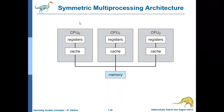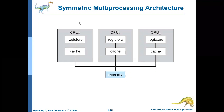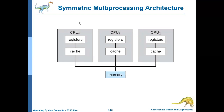Welcome back. In the last lecture, we discussed that there were two types of multiprocessing systems. One is asymmetric multiprocessing and the other one is symmetric multiprocessing. In an asymmetric multiprocessing system, one of the processors acts as a master and the other processors act as workers. The master processor allocates jobs for the other processors. Whereas in a symmetric multiprocessing architecture, all the processors are treated as equal.